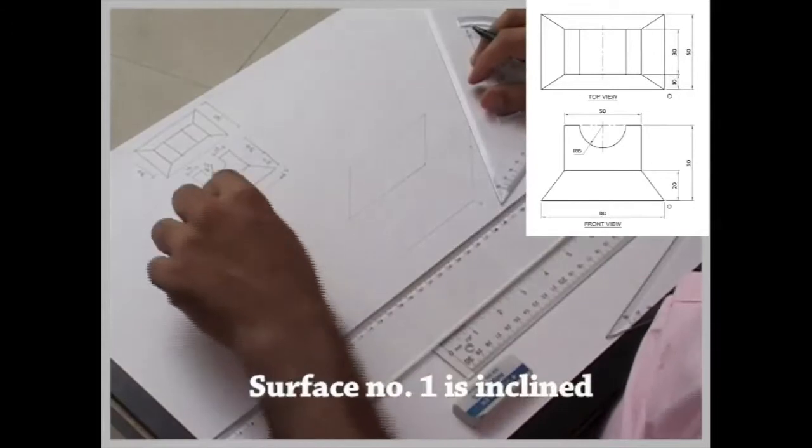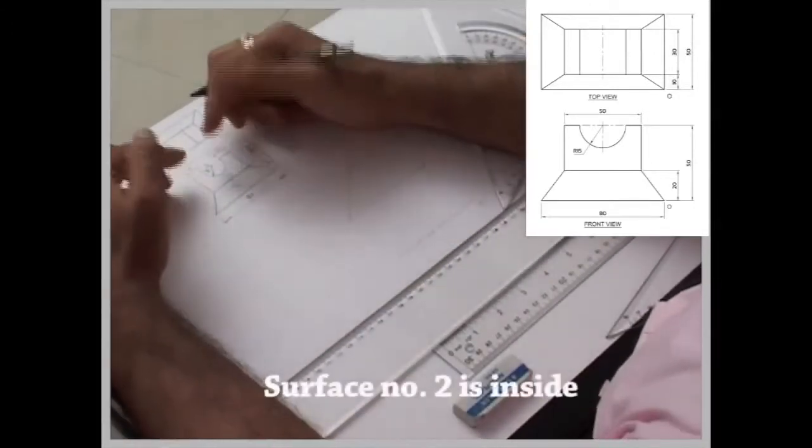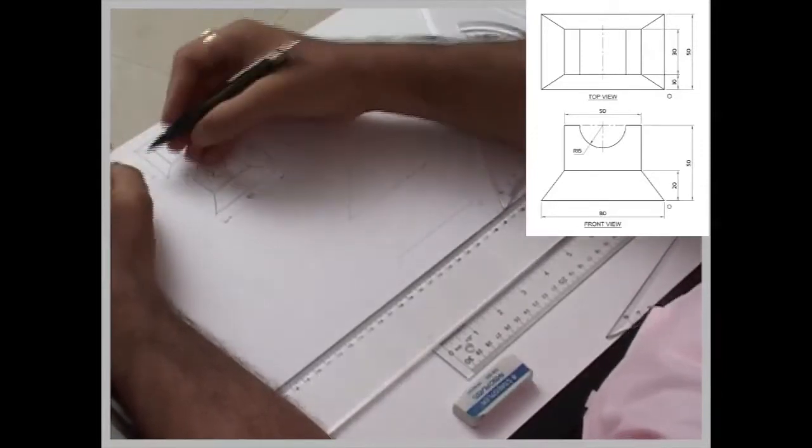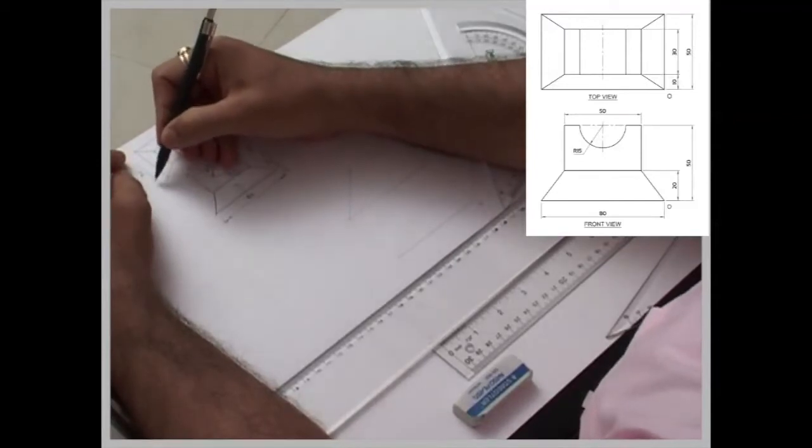So now surface number 1 is inclined. Now if you see the top view, you will come to know that surface number 2 is inside. How much it is inside? This is 50, this is 30, so it is inside by 10.